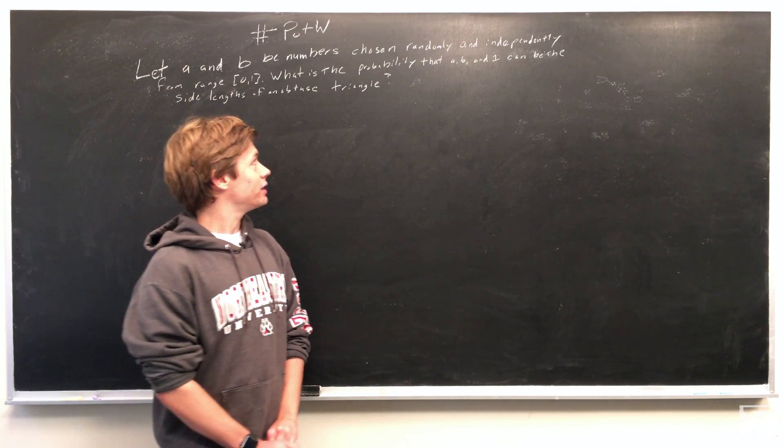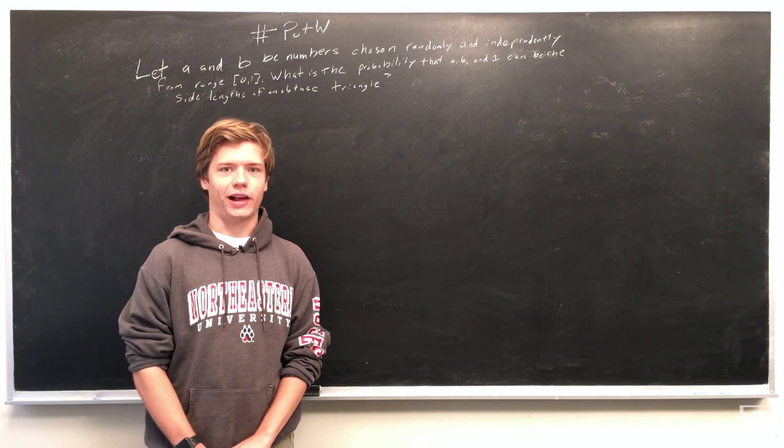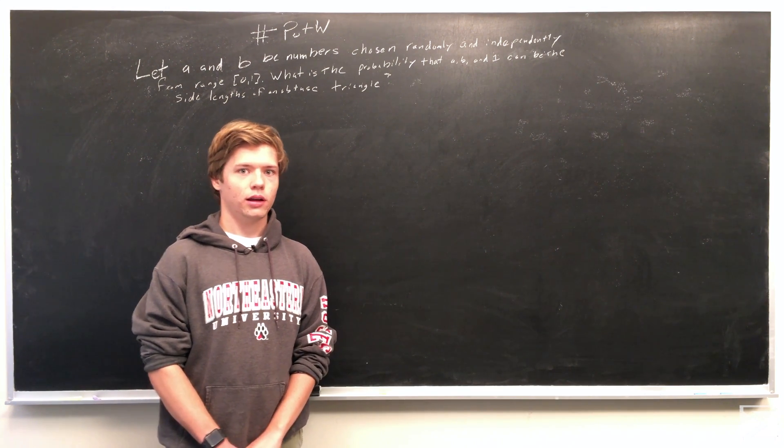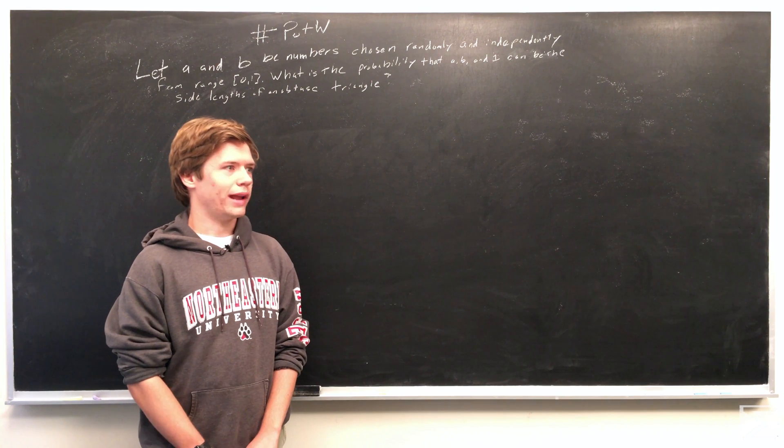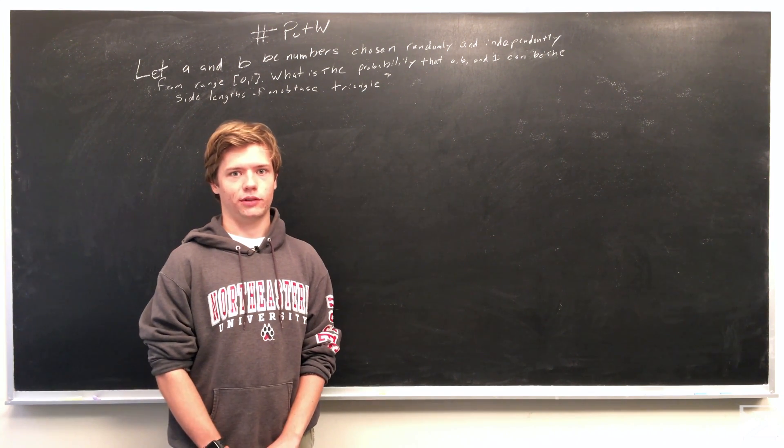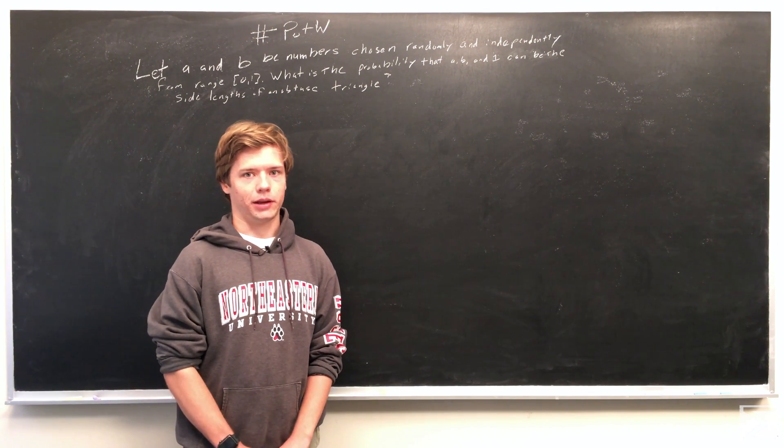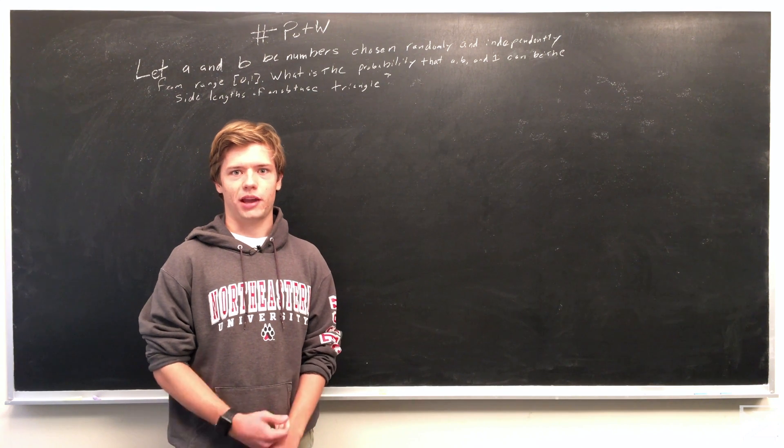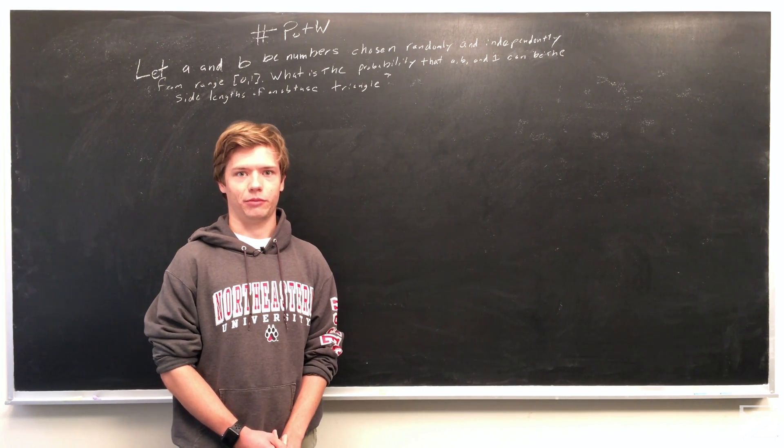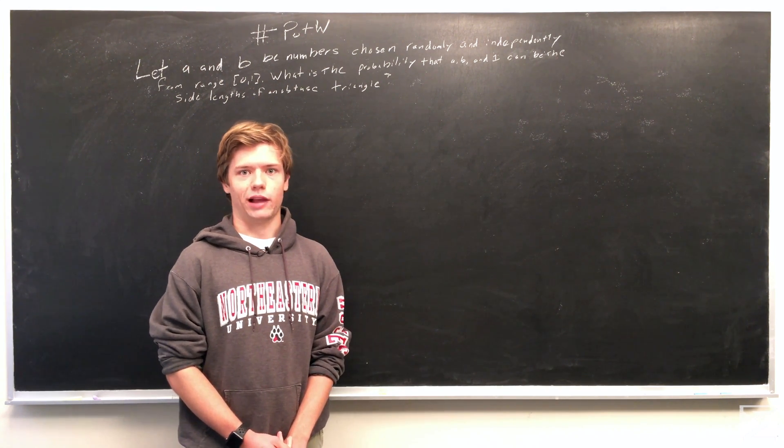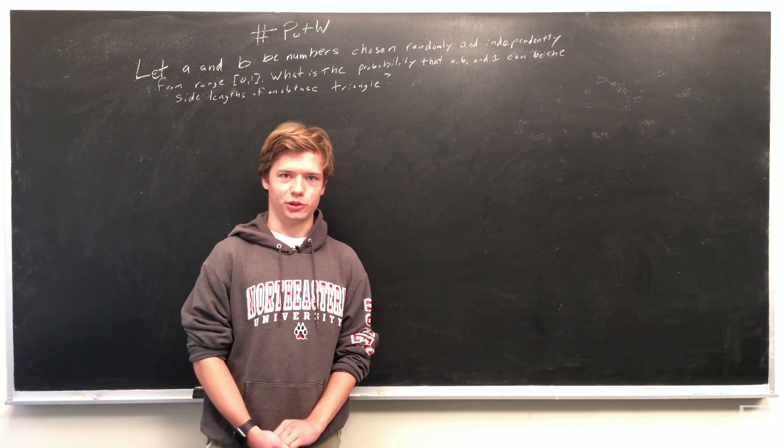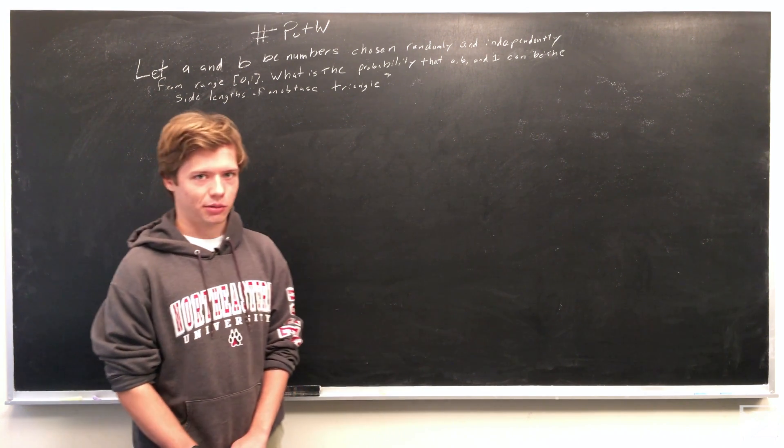Since the maximum value that A and B can have is 1, one has to be the longest side of the obtuse triangle because A and B at their maximum lengths, we can have at most an equilateral triangle, which isn't obtuse. So we can write down that property.